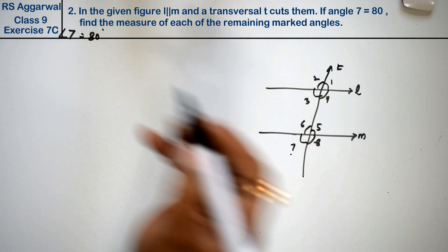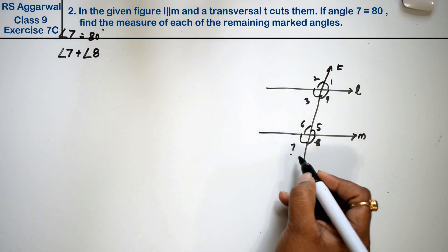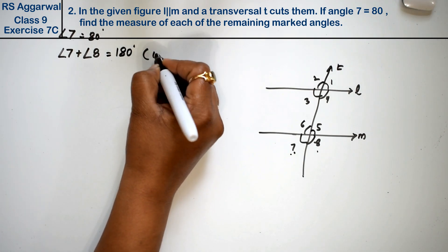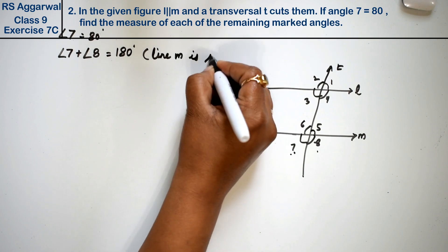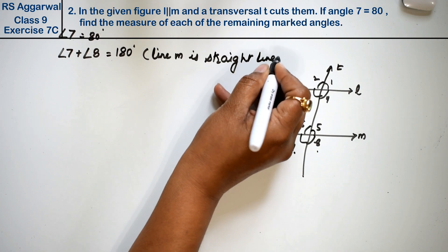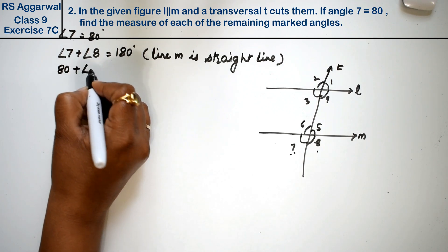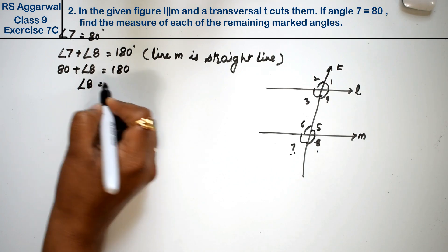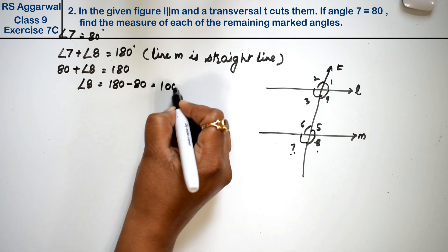Now see, M is a straight line, so angle 7 plus angle 8 should equal 180 degrees, because M is a straight line. So angle 7 is 80 degrees, plus angle 8 equals 180 degrees. Therefore angle 8 is 100 degrees.